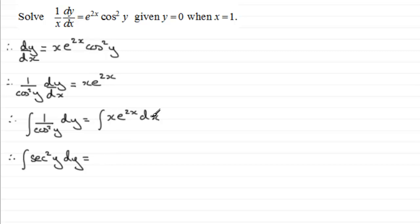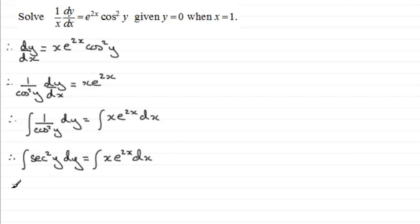So that's the integral of sec squared y with respect to y. On the right side we've got a product of two functions of x, so this is going to involve integration by parts. The integral of sec squared y with respect to y is tan y, so we write that in as tan y. There'll be a constant as well, but we only need to put it on one side — I'm going to put it on the right hand side.